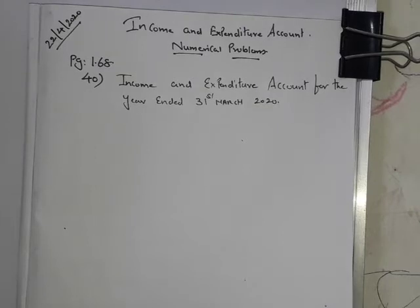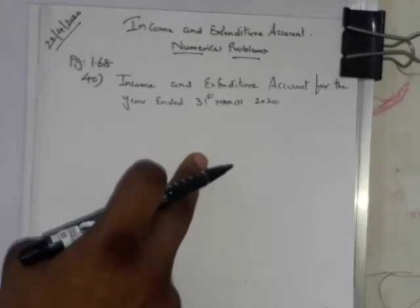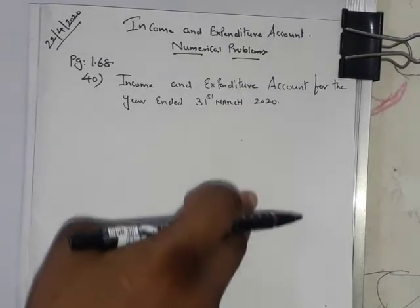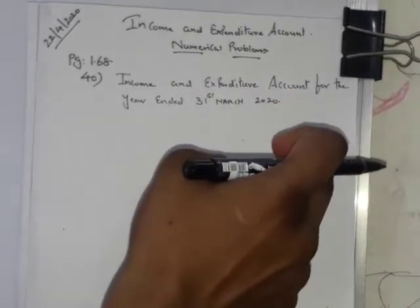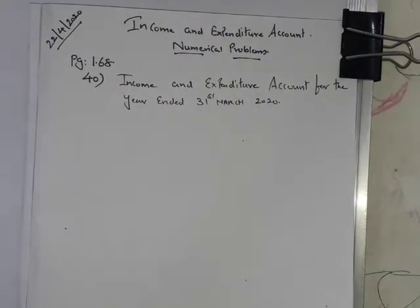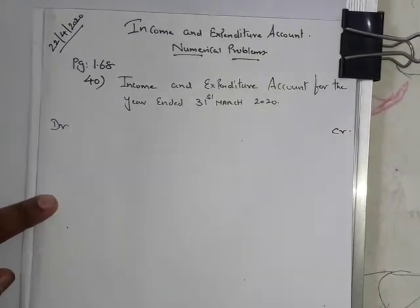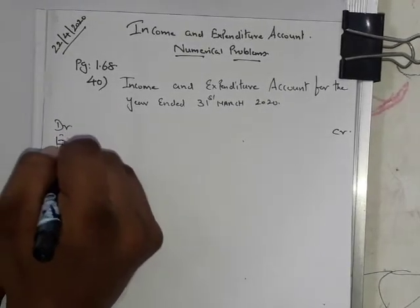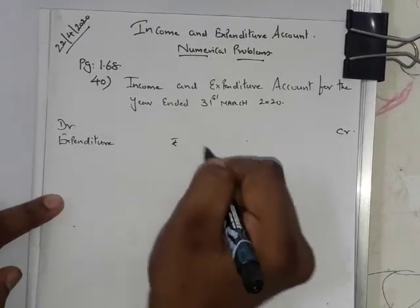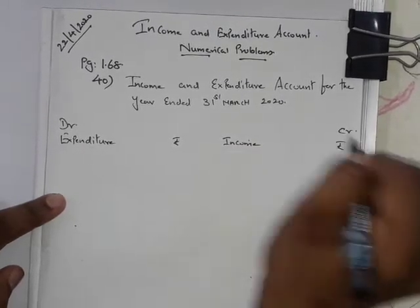Check whether the name of the organization is given — it is not. Since the name is not given, you write it that way. If the name is given, then write: Income and Expenditure Account of [organization name] for the year ended 31st March 2020. Now prepare the debit side and credit side — debit side denotes expenditure with amount in rupees, credit side denotes income with amount in rupees.